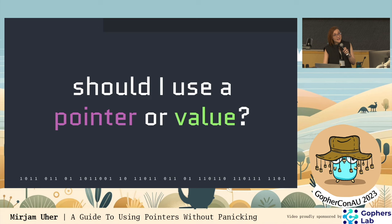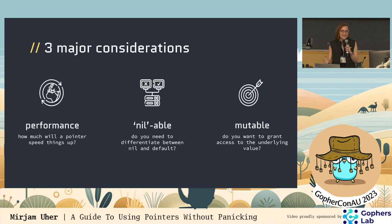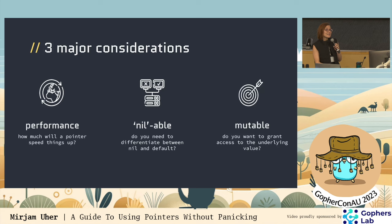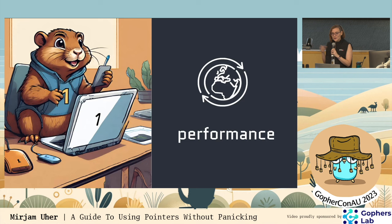Let's look at the eternal question: should I use a pointer or a value? There's a lot that goes into that. For me, I've condensed my thoughts around it into three major considerations. The first one is performance — how much will using a pointer actually speed things up? The second is nilability — do you need to differentiate between nil and the default value? And lastly, mutability — do you want to grant access to the underlying value?